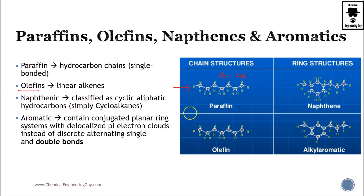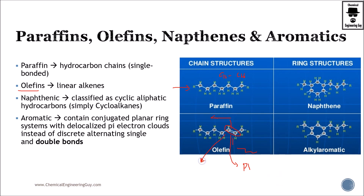Then we have olefins. These are the most precious one of all these four. Why? Because the market and the petrochemical industry has a very huge demand for them. The linear alkanes have a double bond. Why would you want the double bond? Mainly for plastic production — if you break the double bond, you can add several units between them and they will produce polymers. But also there are a lot of chemical pathways which will favor other products.